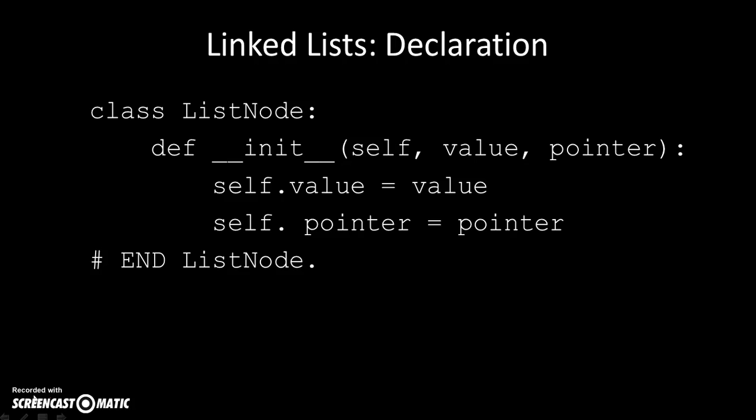How do we declare a linked list node in Python? We say: class ListNode, def __init__(self, value, pointer), self.value = value, self.pointer = pointer. I'm going to ask you to trust me on this — I don't really want to go into an explanation as to what all of this means. You'll see it when you move on to object-oriented programming, but for the moment this is how we declare a node for a linked list in Python.